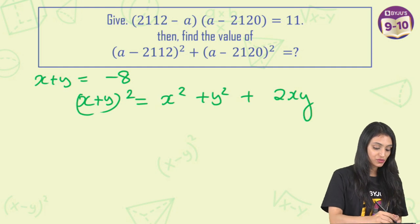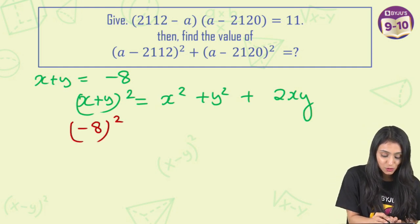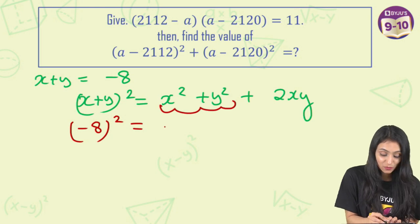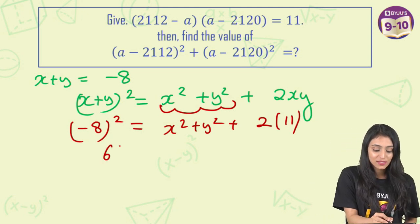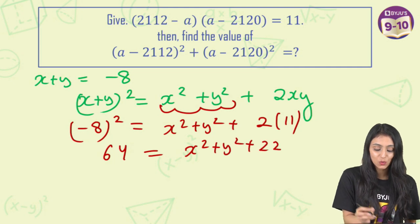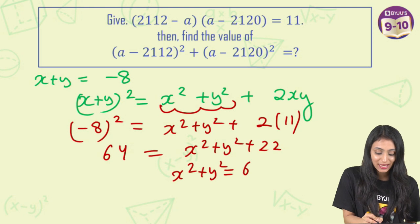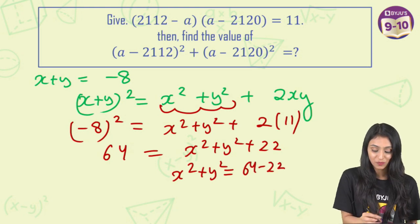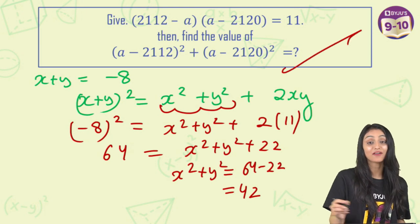Let's put everything here, whatever values we have. So simply we have x+y, that's minus 8 whole square. We need to find out x²+y² and we already have xy, that was 11. So this is going to be 64 equals x²+y²+22. Let's take 22 to the other side. We have x²+y² equals 64 minus 22. That's going to be equals to 42 and that's our value.